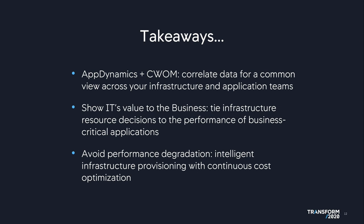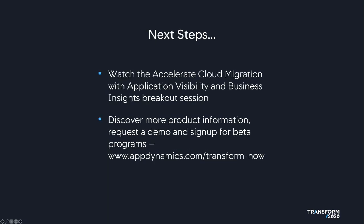Key takeaways from today's presentation: Number one, AppDynamics and CWOM allow you to correlate data for a common view across your infrastructure and application teams. Number two, AppD plus CWOM allows you to show IT's value to the business by tying infrastructure resource decisions to the performance of your business-critical applications in real time. Number three, avoid performance degradation through the two unique use cases discussed today: intelligent infrastructure provisioning and continuous cost optimization. We encourage you to watch our 'Accelerate Cloud Migration with Application Visibility and Business Insights' breakout session to learn more about how AppDynamics will enable you to accelerate and optimize your cloud migration, cloud monitoring, and cloud optimization strategy.